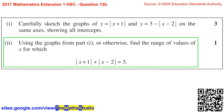Part 2. Using the graphs from Part 1, or otherwise, find the range of values of x for which the absolute value of x plus 1 plus the absolute value of x minus 2 equals 3.